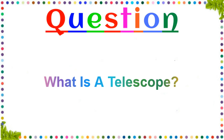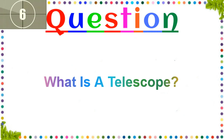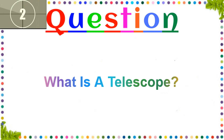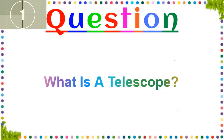What is a telescope? A telescope is an instrument in the shape of a tube with special pieces of glass, lenses, inside it. It makes things that are far away appear bigger and nearer.